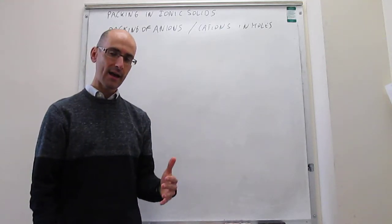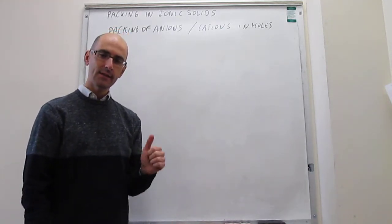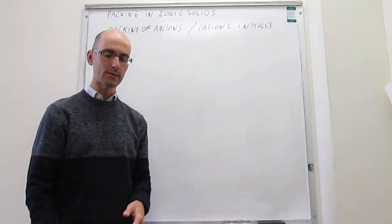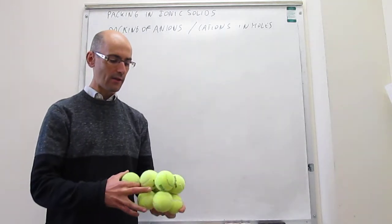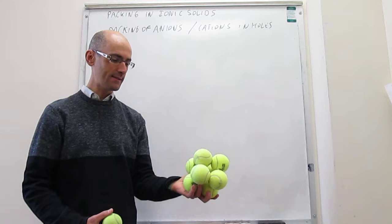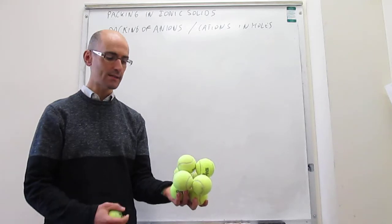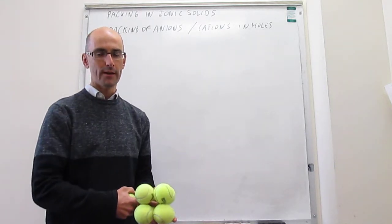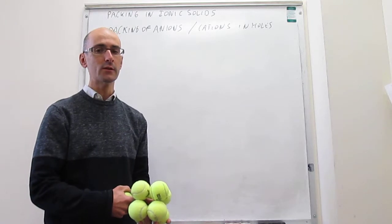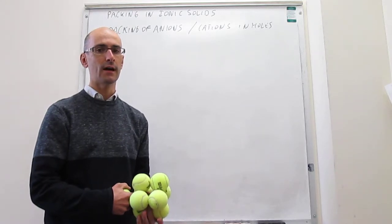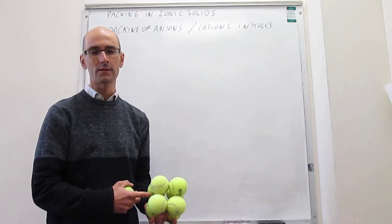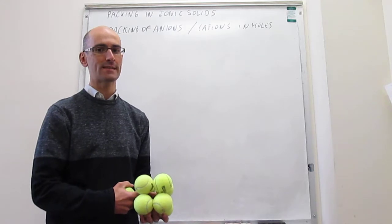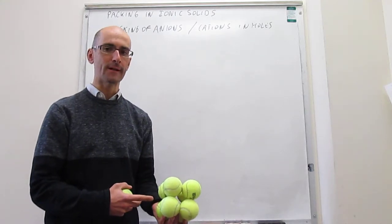If you have a closest-packed lattice, then you're going to have tetrahedral holes and octahedral holes. And if you have a simple cubic lattice, then you're going to have a simple cubic hole. For the rest of this video, we're simply going to count how many holes of each type you have per unit cell.